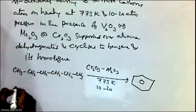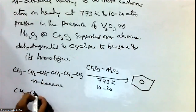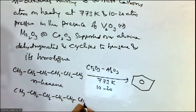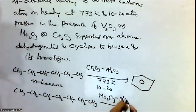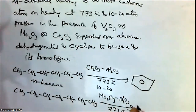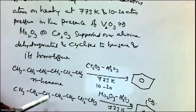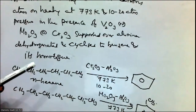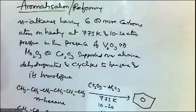Similarly, when n-heptane is treated under these conditions, we get benzene. Instead of chromium oxide, using molybdenum oxide at 773 Kelvin also gives benzene. If the same reaction is carried out using n-octane, we get 1,4-dimethylbenzene. This reaction is called the aromatization or reforming reaction.